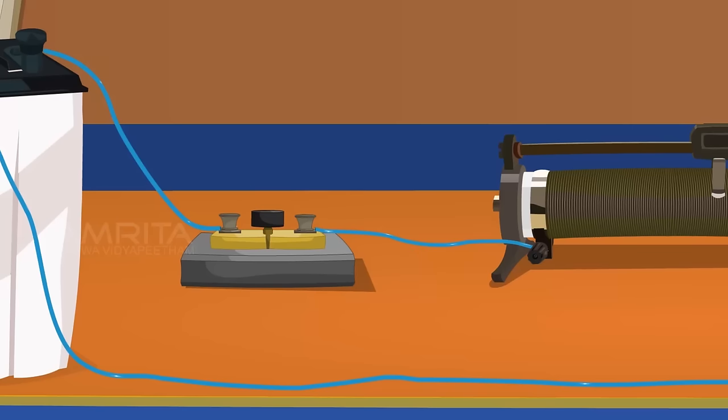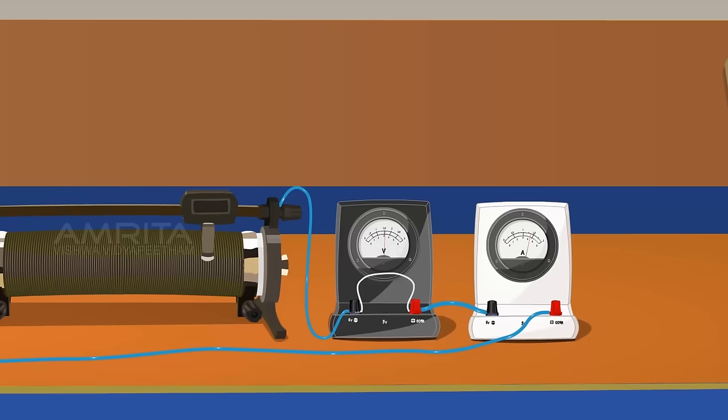Now insert the key and slide the rheostat contact to check the working of the ammeter and voltmeter.